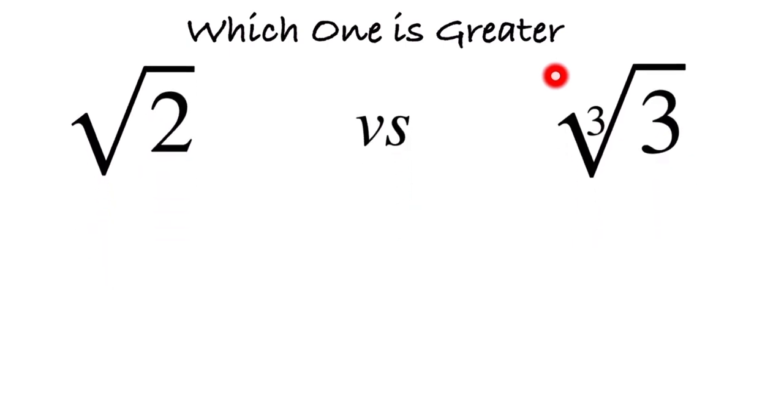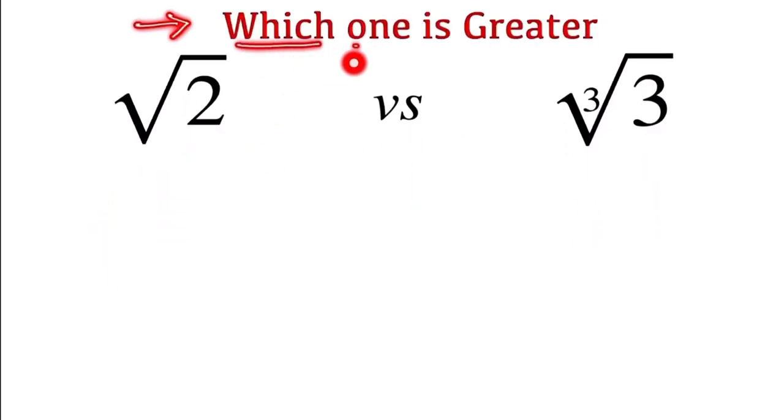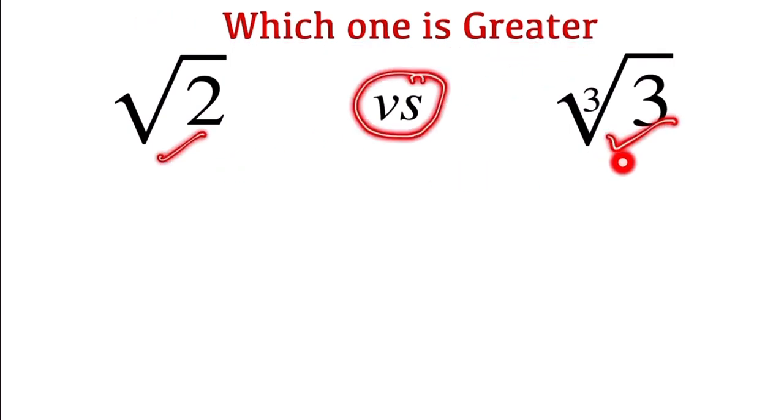Otherwise, let's see the solution. So this is our question: we have to decide which one is greater, square root 2 or cube root 3. Square root 2 can be written as 2 to the power 1/2.